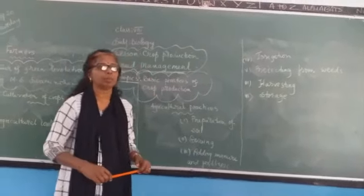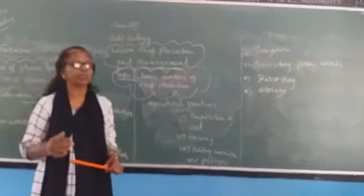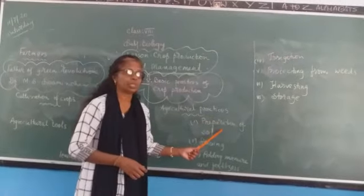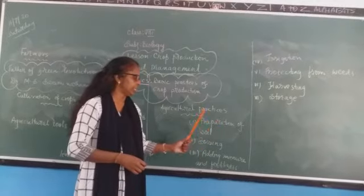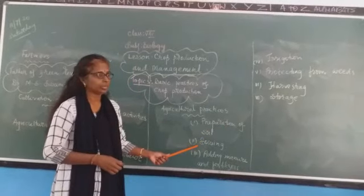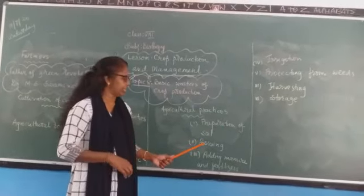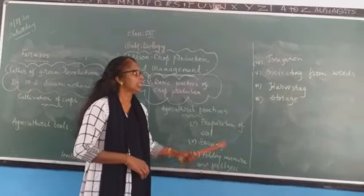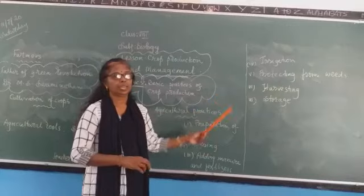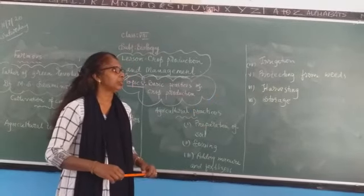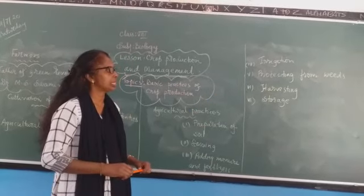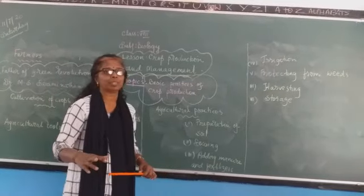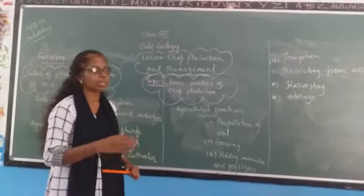It is called agricultural practices — involved in crop production. The first one is preparation of soil, after that sowing which is nothing but putting seeds, next is adding manure and fertilizers, then irrigation, then protecting from weeds, then harvesting, and the last one is storage. These all are the different practices and should be done step by step.